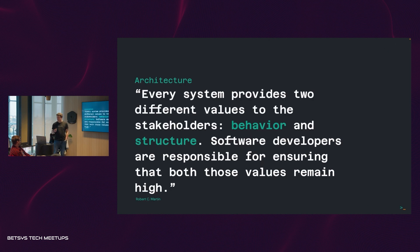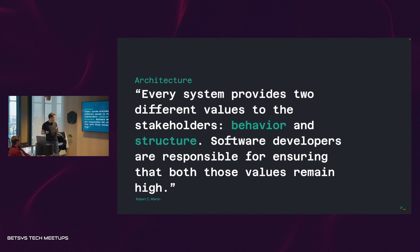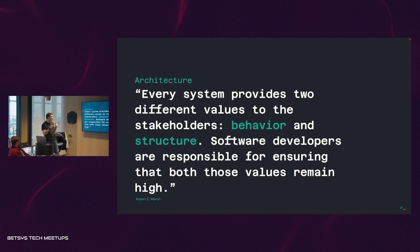To kick this off, here's a motivational quote from Robert C. Martin, the author of the book Clean Architecture. Every system provides two different values for their stakeholders: behavior and structure. Behavior, in layman's terms, is what makes money or saves money — the reason for every computer system to exist. Structure is how we actually structure the code, how we make the behavior happen, and how resilient it is to changes.